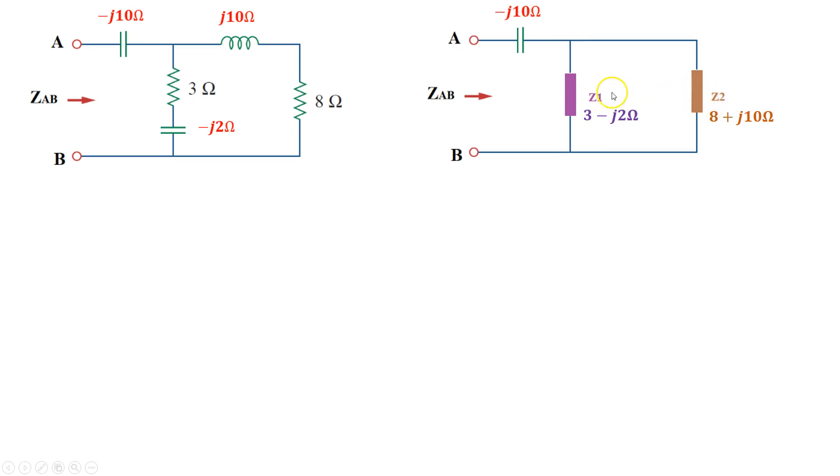When two impedances are in parallel with each other, the combined parallel impedance is given by the multiplication of these two impedances, z1 times z2, divided by the sum of z1 plus z2. So z1 is 3 - j2, and z2 is 8 + j10, multiply that and divide by the sum of these two. This is what we get.